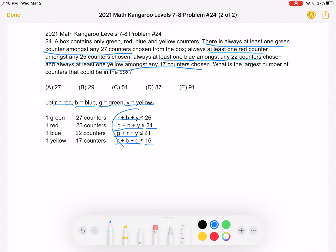Now we can add all of these inequalities together. We get 3R + 3B + 3G + 3Y is less than or equal to 87.